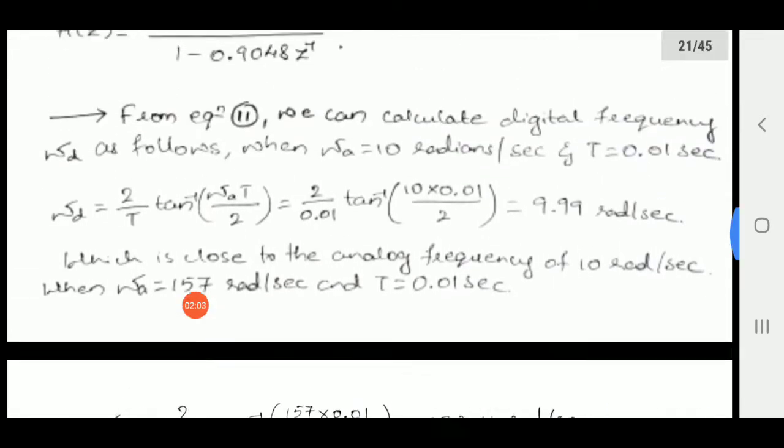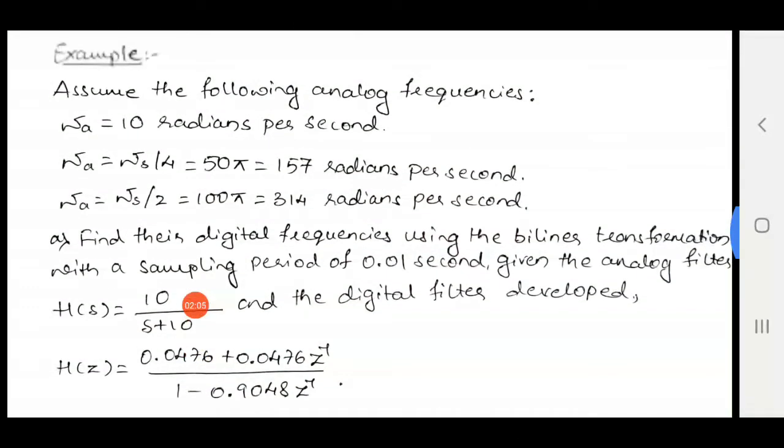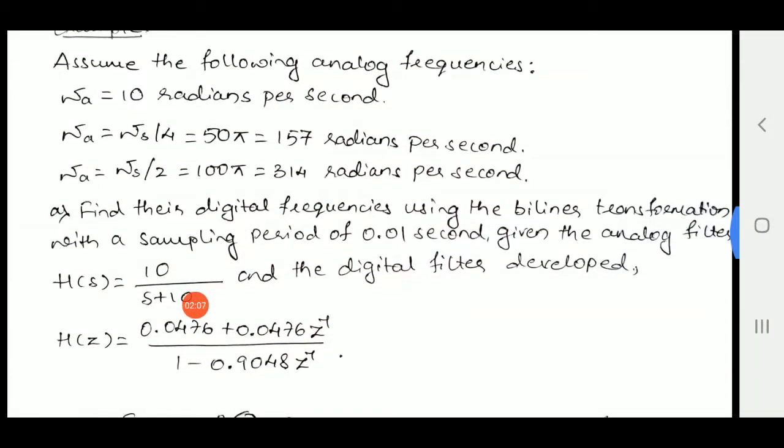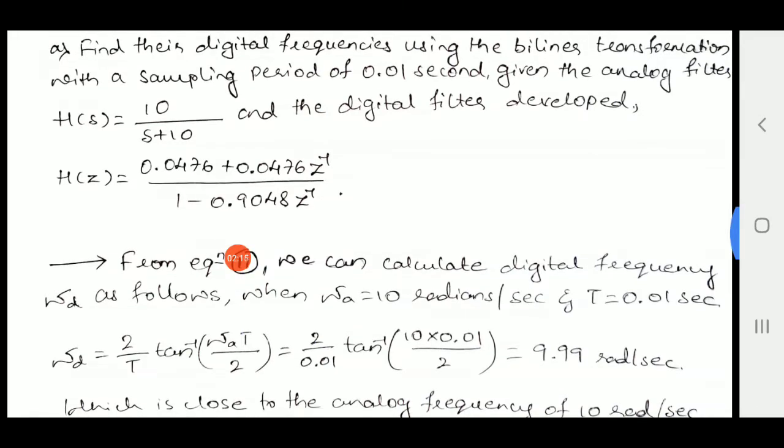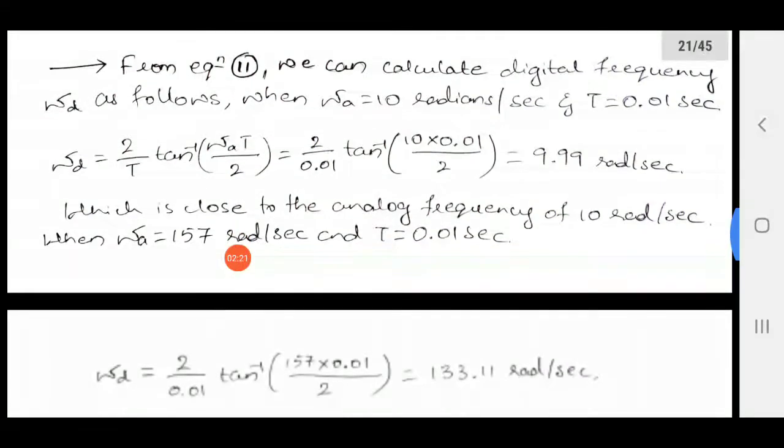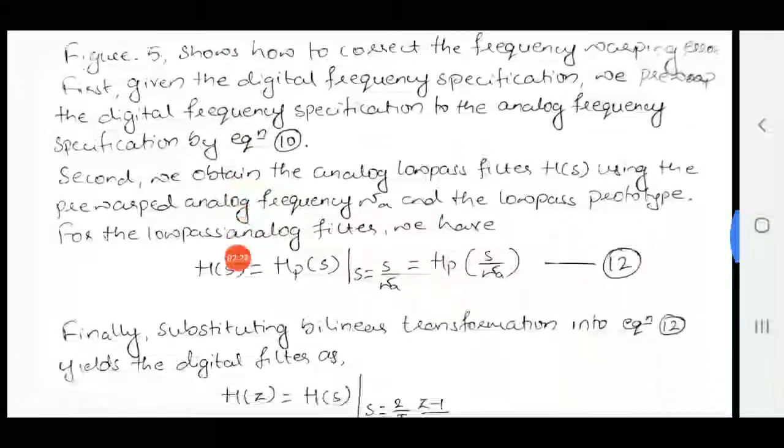I hope it is clear for everyone because it is very simple problem. Based on this problem it is asked for 5 marks in your external exam also. They have just given the transfer functions just to confuse so that you can divert from the actual problem: simple problem given analog, find digital. I hope it is clear for everyone about this value.